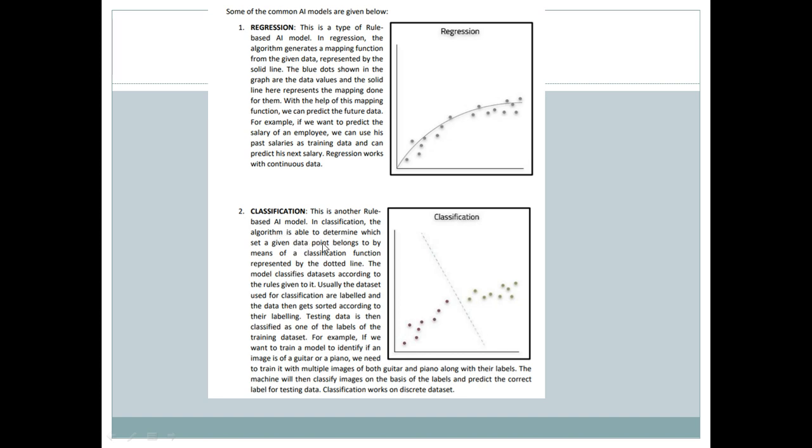In classification, the algorithm is able to determine which set a given data point belongs to by means of a classification function represented by a dotted line. The model classifies data sets according to the rules given to it. Usually, the data set used for classification is labeled. For example, if points are labeled red and green, if we get a new point, we would label it as green or red based on its position.